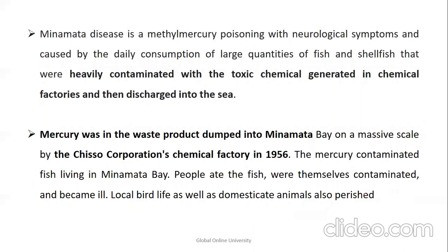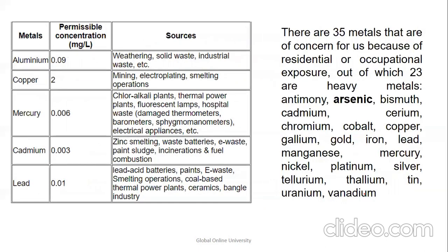The Minamata Disaster — a case of methyl mercury poisoning — was caused by consumption of large quantities of fish and shellfish heavily contaminated with mercury discharged from factories into the sea. Mercury waste was dumped into Minamata Bay on a massive scale by a chemical factory in 1956 in Japan. People ate contaminated fish and became severely ill — this became known as Minamata Disease.